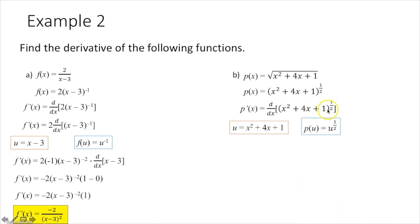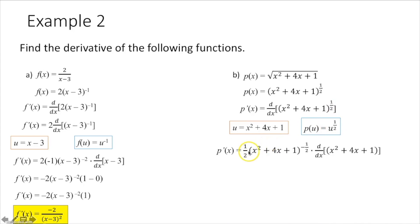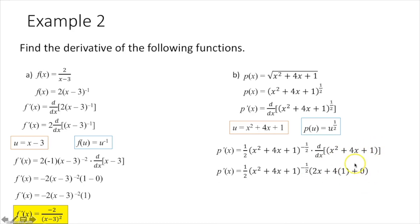According to the chain rule, I take the derivative of my outermost function, so I get one-half u to the negative one-half, or one-half times x squared plus 4x plus 1 to the negative one-half, times the derivative of my innermost function x squared plus 4x plus 1. When I take that derivative, I get 2x plus 4 times 1 plus 0, which simplifies to 2x plus 4.